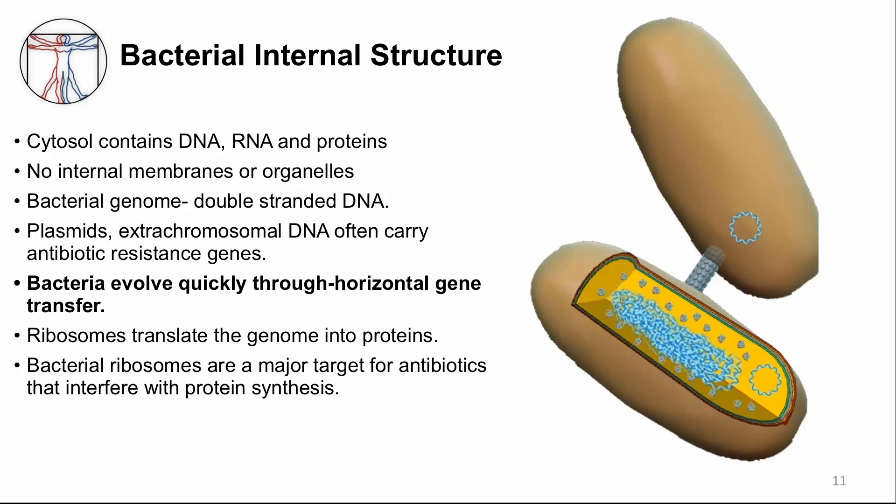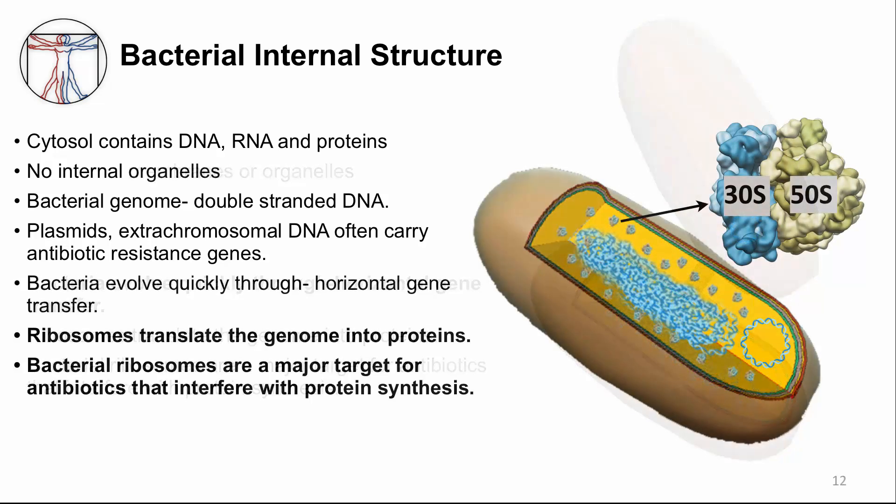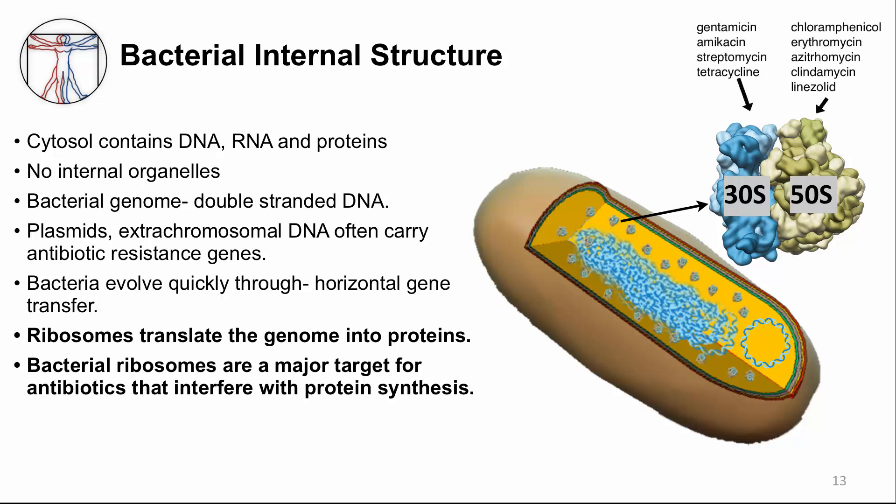Bacterial ribosomes are factories for protein production. Bacterial ribosomes are different enough from our eukaryotic ribosomes that they are good targets for antibiotics. Here is a short list of common antibiotics that affect each of the two subunits of the bacterial ribosomes and interfere with protein synthesis.